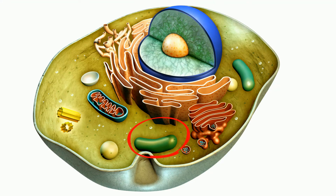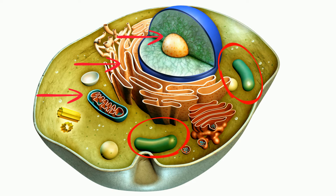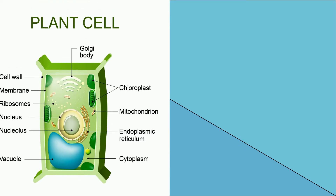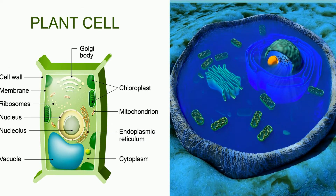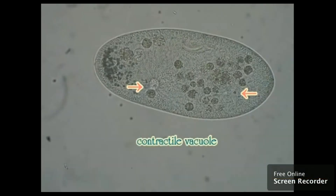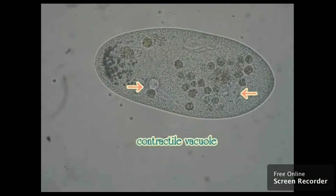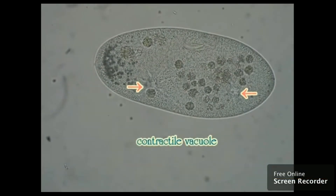Vacuoles store water, waste, and other materials in eukaryotic cells. Remember, eukaryotic cells are cells with membrane-bound organelles and a nucleus. Vacuoles are storage sacks in plants and animals and even protists, but they are not found in bacterial cells.